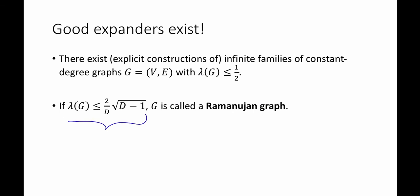It turns out that the best we can hope for is something like this. That is, we can hope that the expansion of G, the second eigenvalue, is something like this: 2 divided by D times the square root of D minus 1. And if G achieves this, it's called a Ramanujan graph.